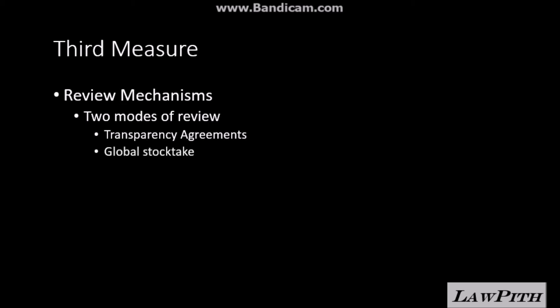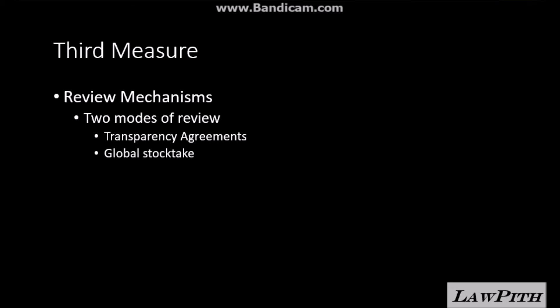The second component is known as the Global Stocktake. What the Global Stocktake does is that it takes into account all of these transparency reports. It sits once every five years and discusses how progress is moving towards reaching the objective of the Paris Agreement. It also implements various measures to persuade countries to set much more ambitious INDCs than what was set earlier. So these are the three measures which the Paris Agreement has put in place to achieve its objective of limiting global average temperature by 2 degrees Celsius from what it was during the pre-industrial era.